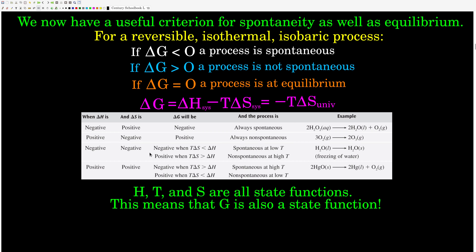These are all the possibilities in this table here. We're looking at the sign of delta H and delta S of the system and how they affect spontaneity, and also how temperature can affect spontaneity under certain conditions. It can be spontaneous at some temperatures and not others. So if delta H is negative and delta S is positive, both terms contribute a negative delta G, so delta G is always going to be negative. That process is always spontaneous, no matter what the temperature.